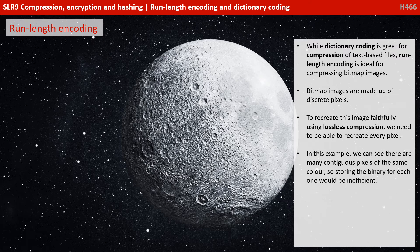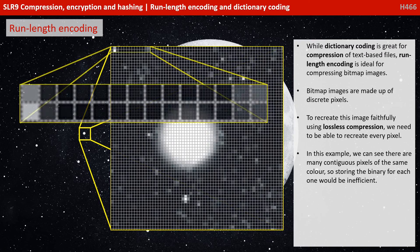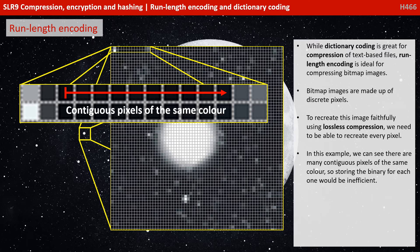While dictionary coding is great for compression of text-based files, run-length encoding is ideal for the compression of bitmap images. Bitmap images are made up of discrete pixels. To recreate this image faithfully using lossless compression, we need to be able to recreate every single pixel. In this example, however, we can see there are many contiguous pixels of the same colour, so storing the binary for each one would be a very inefficient method.